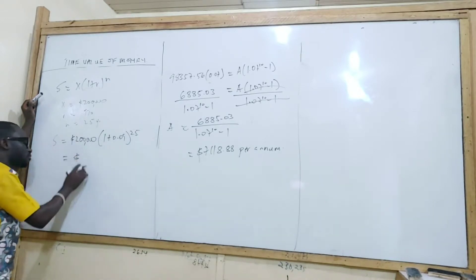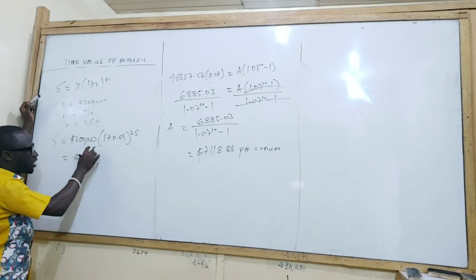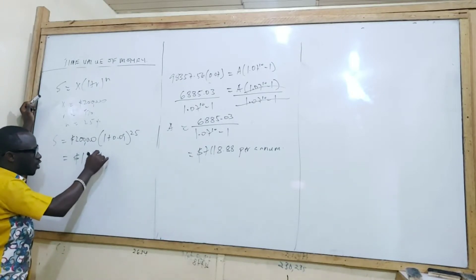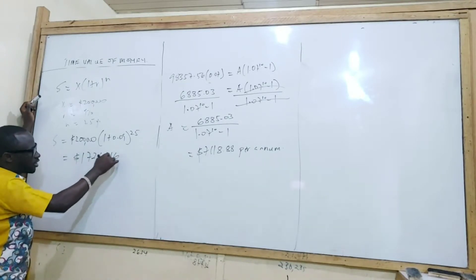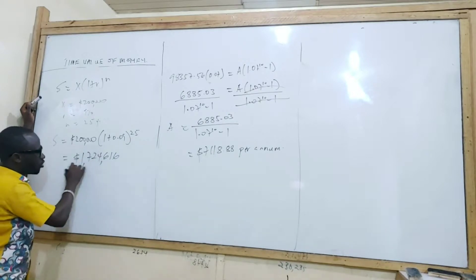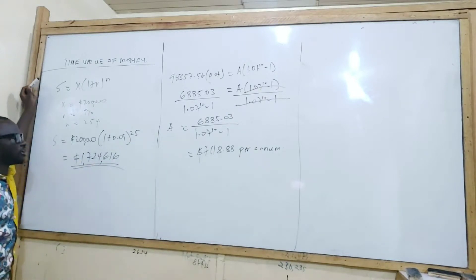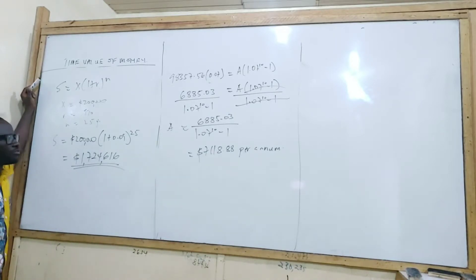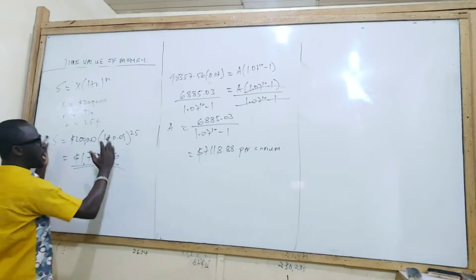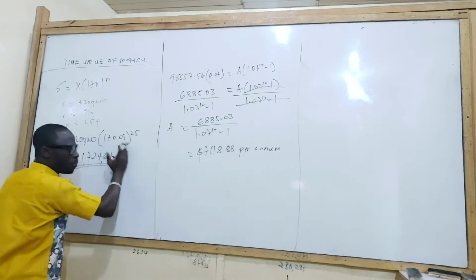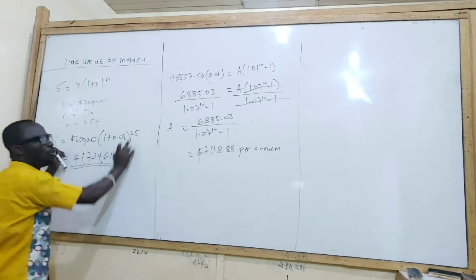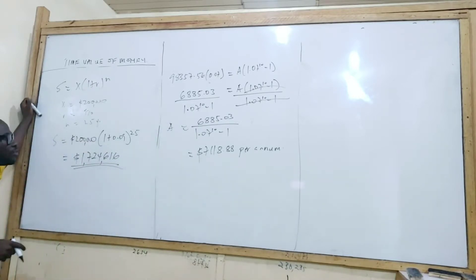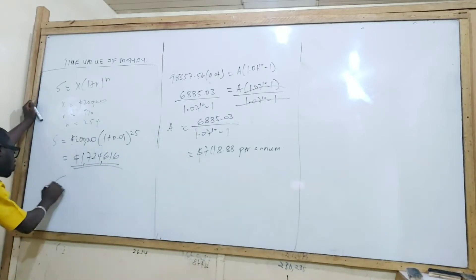The result is $1,724,616. So you pay $1,724,616 in 25 years. Now that we have how much he is going to be paying in 25 years' time, we will use the Geometric Progression Formula to get the annual payment. S equals A times (R^N minus 1) over (R minus 1).